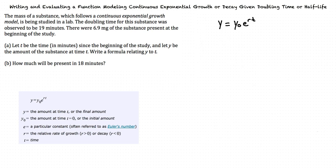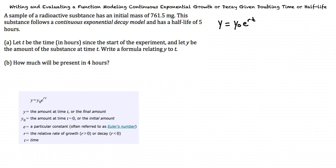Let's do one more example. Write a formula relating y to t. So what is our y sub 0? 761.5 milligrams, right? Yep, that's right. Now how do we solve for r?